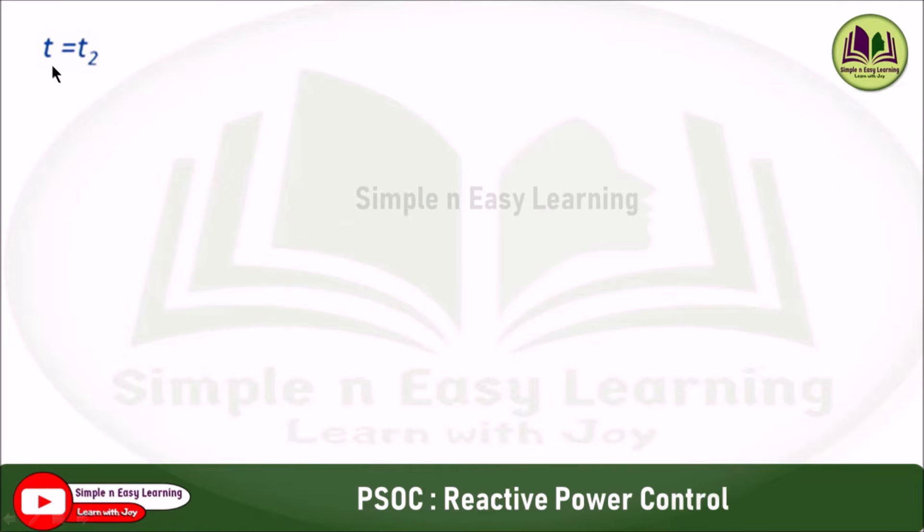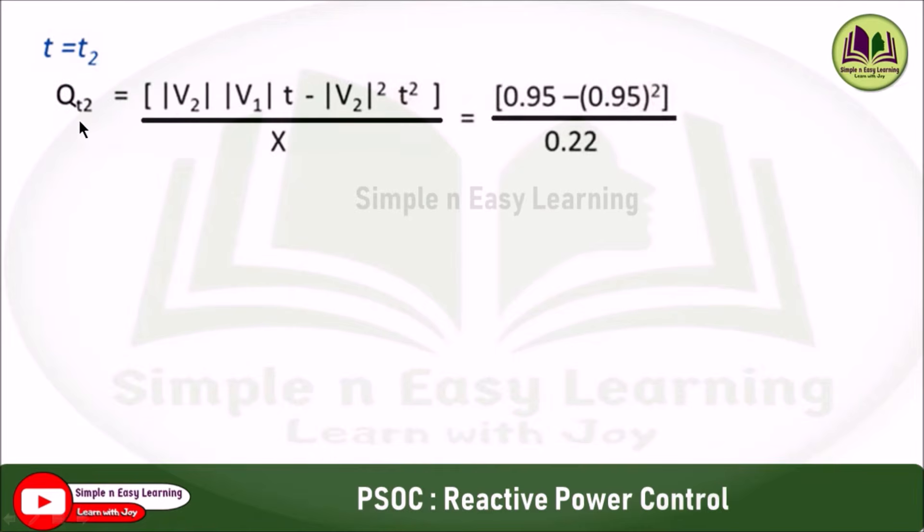Second, for taps T equals T2, apply the formula: V2 times V1 times T minus V2 squared T squared divided by X. T equals 0.95 here, so 0.95 minus 0.95 squared divided by 0.22, that gives 0.2159 per unit.